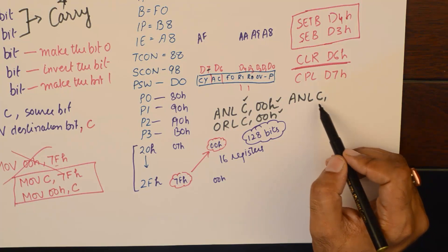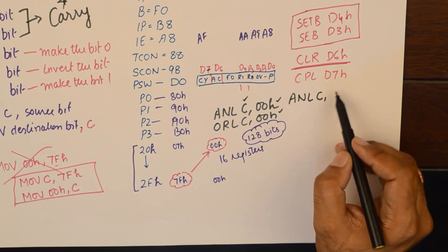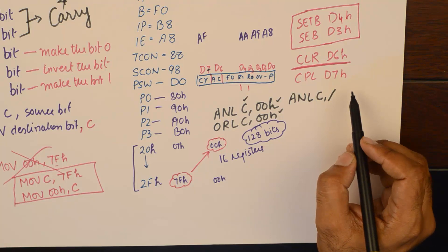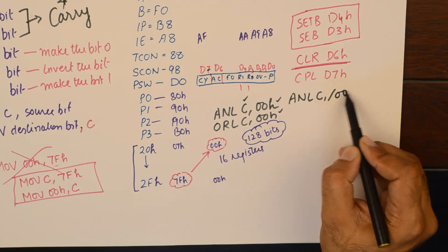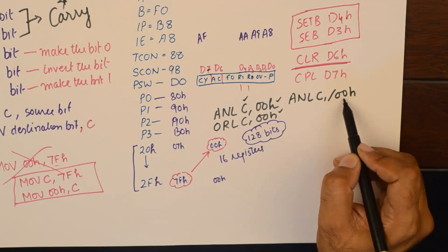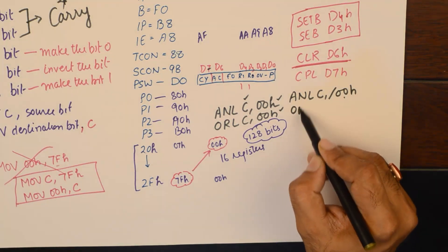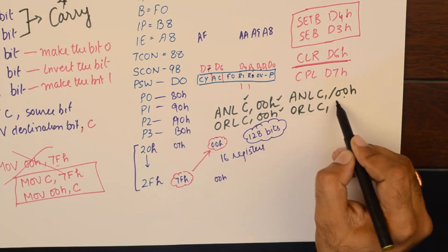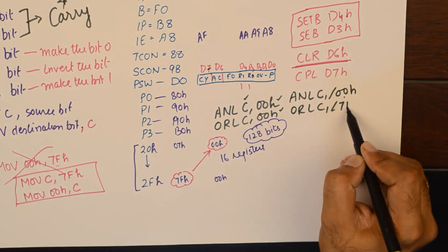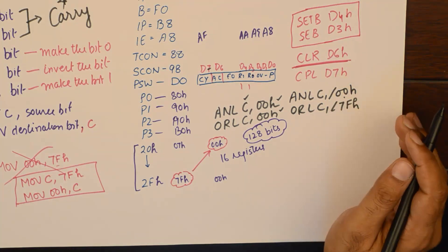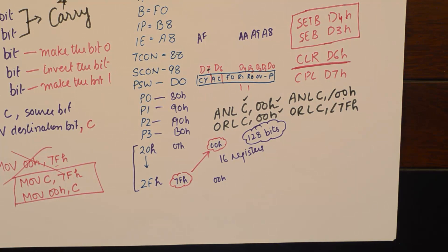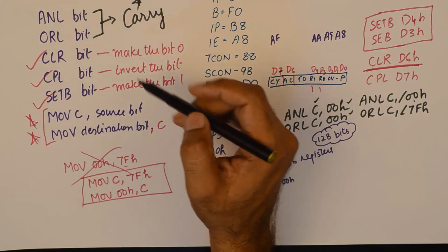If you want to perform an AND operation with the inverted bit, then you could use a slash 00H. This is going to invert the bit first and then perform the logical AND operation. And similarly, these are valid commands.